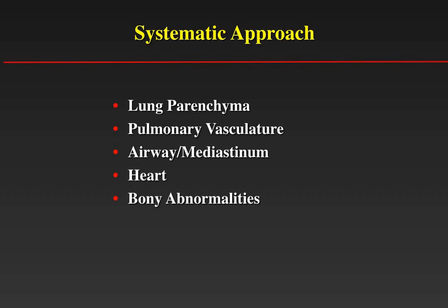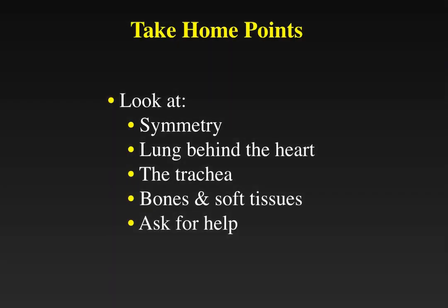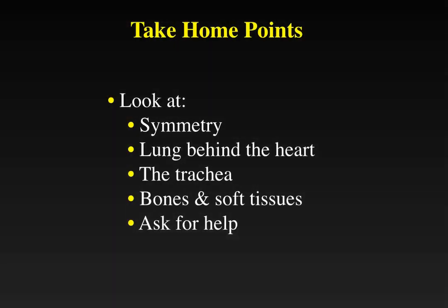This systematic approach can be very useful in evaluating a pediatric chest, especially if you look at each individual component. Final take-home points: pay attention to pulmonary symmetry; look at the lung behind the heart, as this area is often missed for pneumonias; look at the size, position, and displacement of the trachea; when you're done with the main parts of the chest, look at the bones and soft tissues because sometimes very significant things are hidden there. And finally, if you have a question, ask for help.